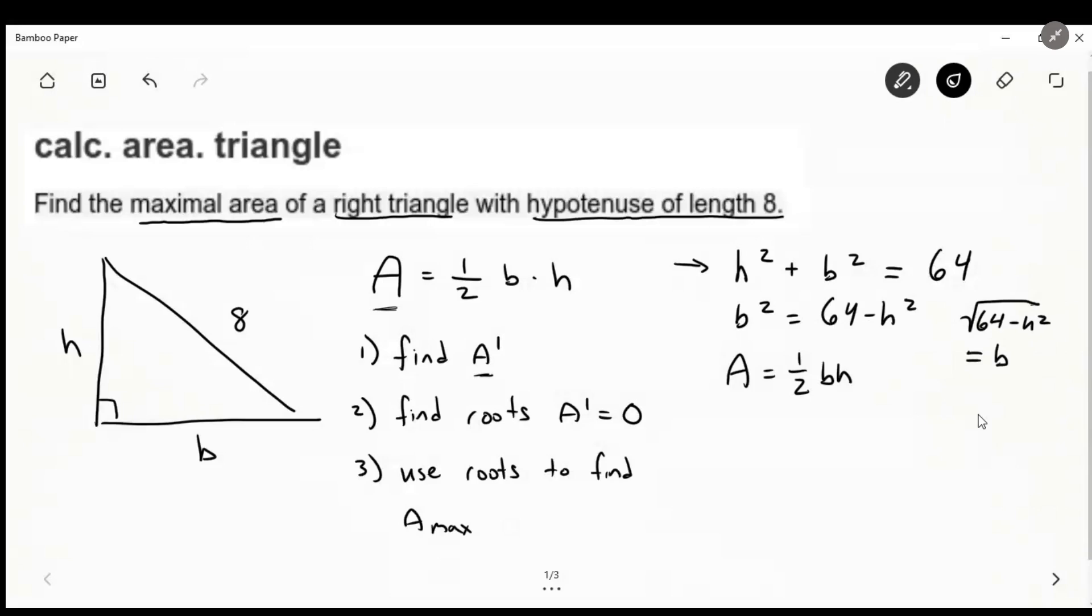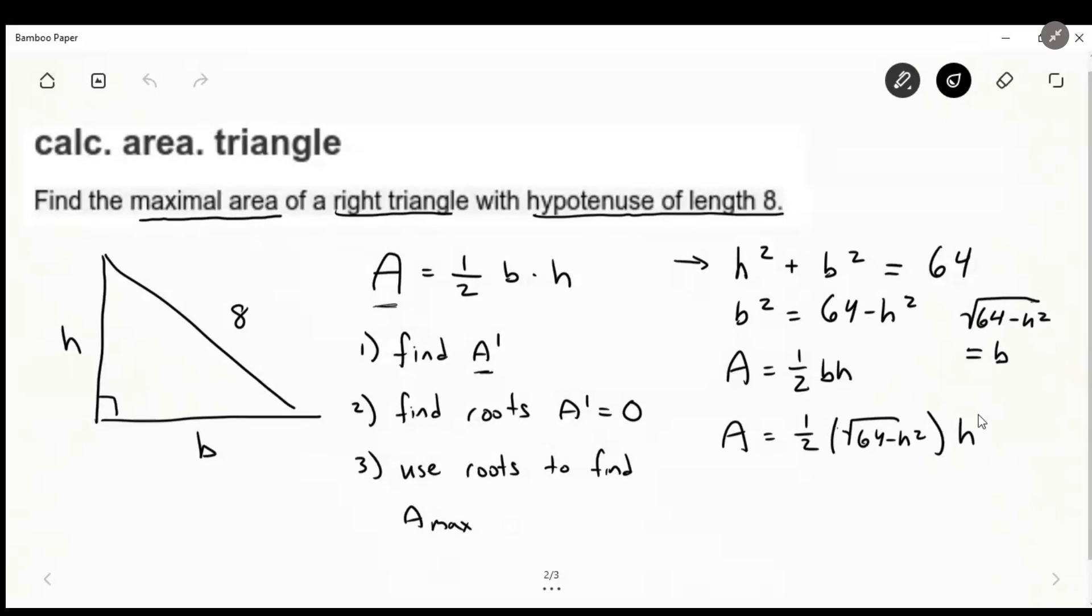And now that we have b, we can substitute that into our area. So we can say a equals one-half of, and then we substitute in radical 64 minus h squared, and then h. And you could do that for h or b, it really doesn't matter. So going on to the next page here. So now we have a equals one-half h radical 64 minus h squared.